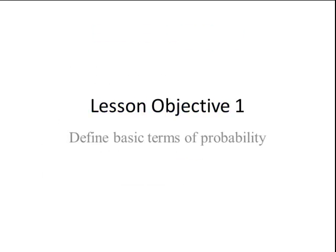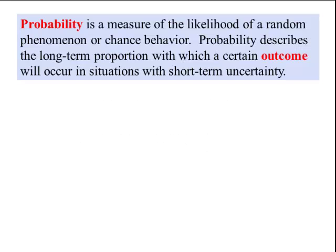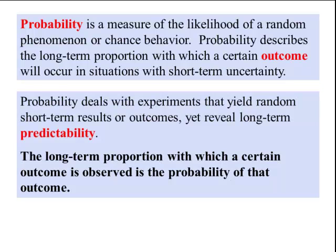Lesson objective number 1. Probability is the measure of the likelihood of a random phenomenon or chance behavior. Probability describes the long-term proportion in which a certain outcome will occur in situations with short-term uncertainty. Probability deals with experiments that yield random short-term results or outcomes, yet reveal long-term predictability.